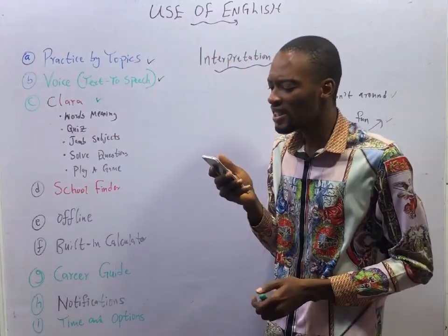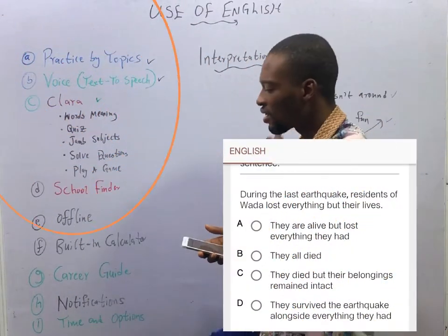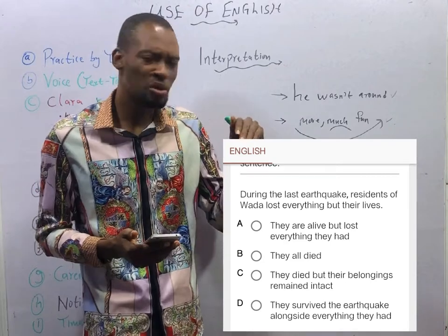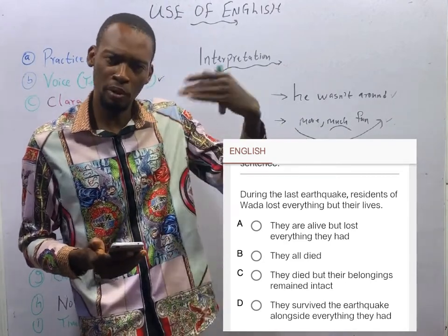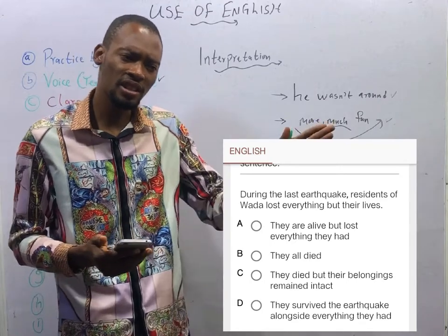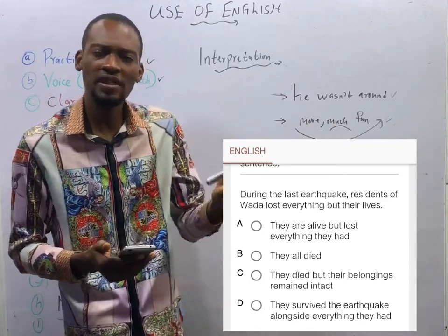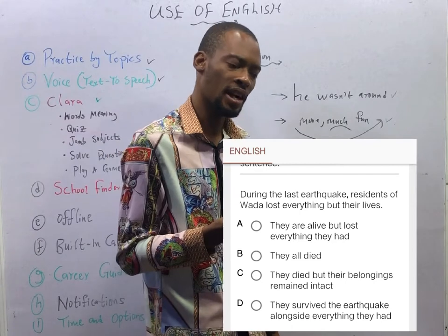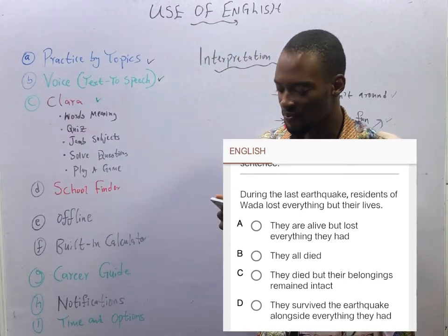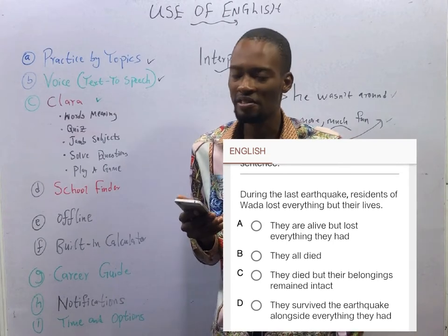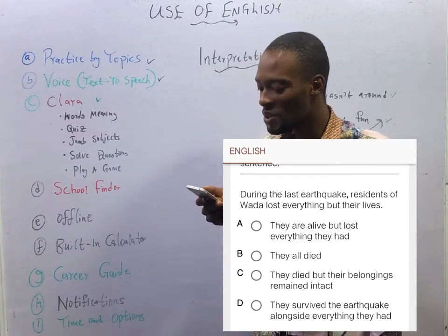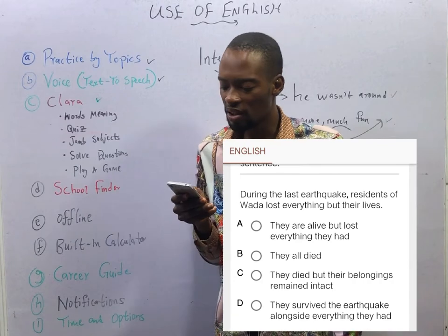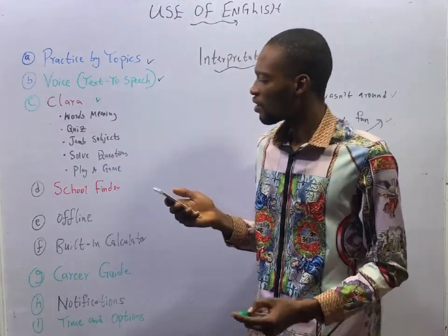During the last earthquake, the dwellers of the area lost everything but their lives. When you see 'but' in a sentence, it is used to show contrast — they lost everything but they did not lose their lives. Everything was gone but life remained. Option A: they were alive but lost everything they had — correct. Option D: they survived the earthquake alongside everything they had — wrong.